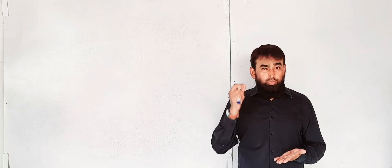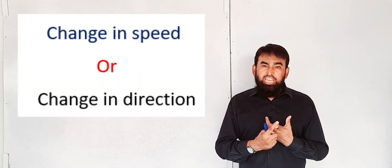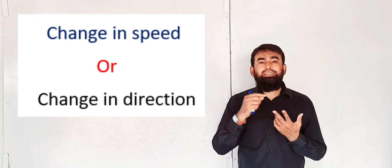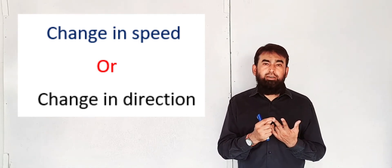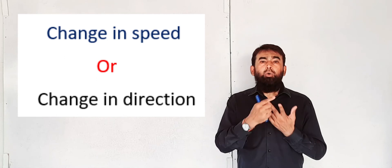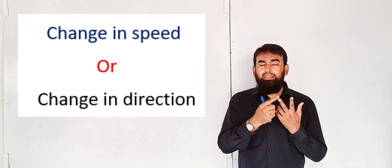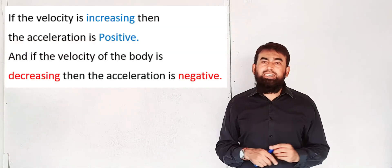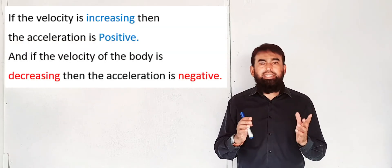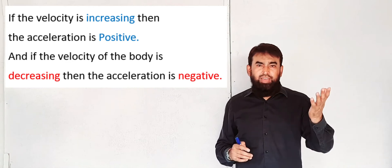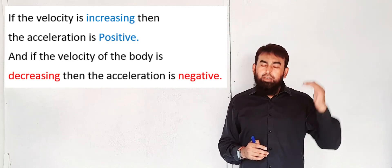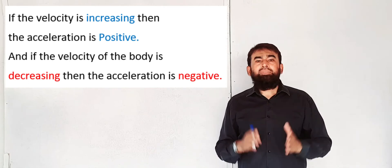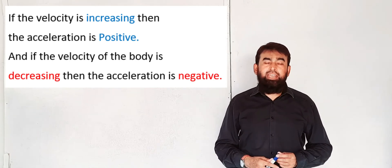Acceleration is caused due to two things. This is very important to understand — there are two factors which can change velocity and cause acceleration. One is the speed of the body and the other is the direction of the body. If the velocity of the body is increasing, we say there is positive acceleration. If the velocity is decreasing with respect to time, then there is negative acceleration.